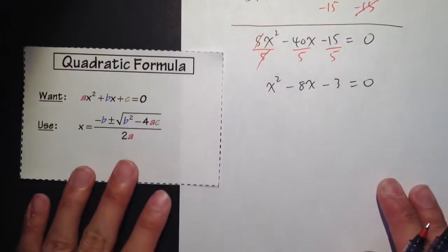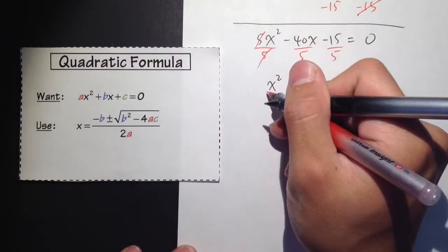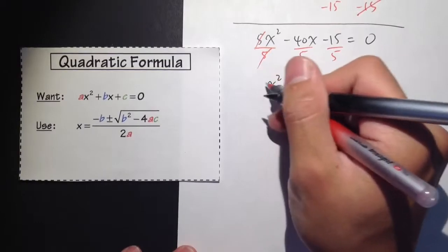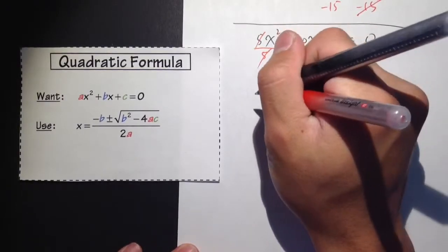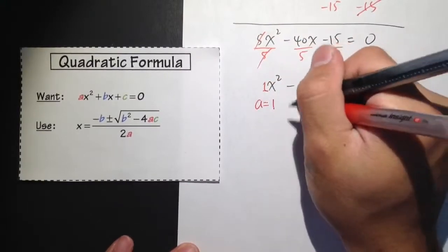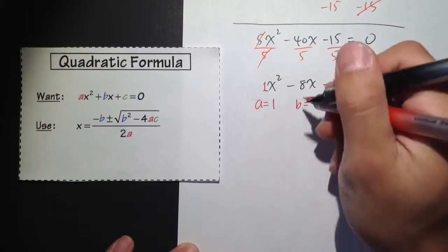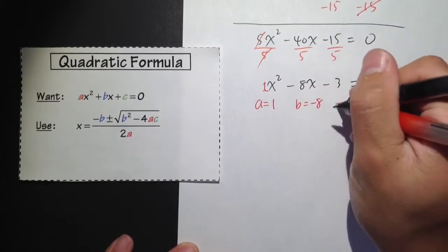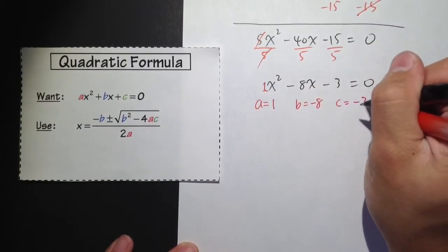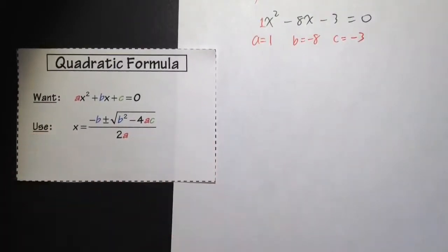So now I can use the quadratic formula on this. Pay attention to what do we have in front of the x². Here, we don't have anything visible, but that means we have a 1 in front of it. a = 1. b is equal to the number in front of the x, which is the negative 8. And c = -3. So we get our a, b, and c, we can use the quadratic formula.